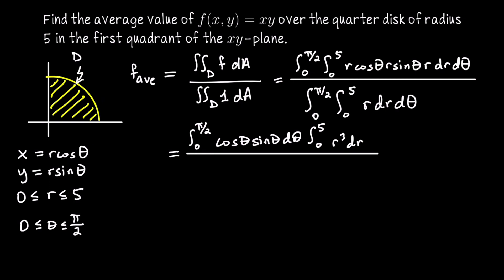For the denominator, we're asked to find the area of the quarter disk of radius 5. So that's going to be pi times 5 squared. That whole denominator is the area of this disk in the first quadrant.